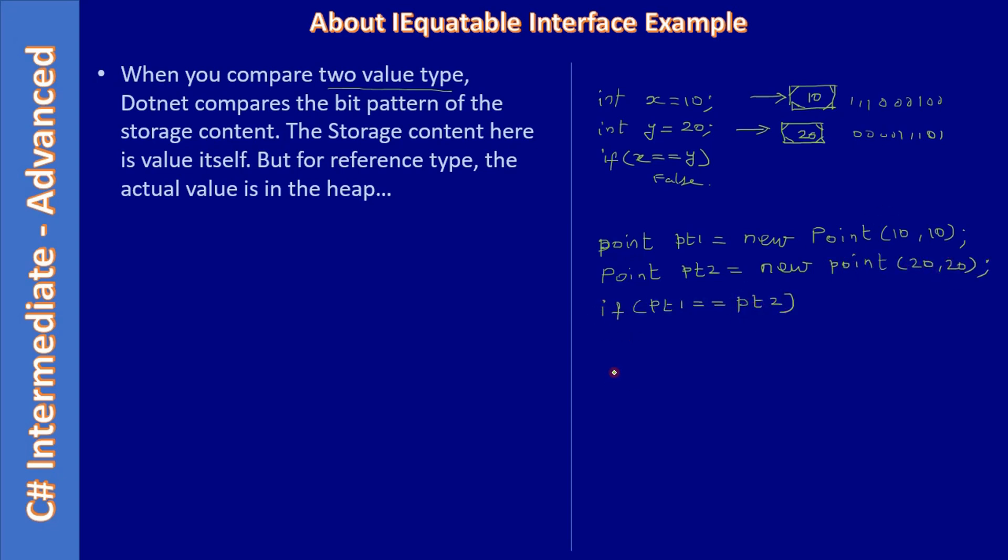Here what happens - let's say pt1. The content is not a value, it's an address location of the heap. Here you can see 0x. And in pt2, we are not storing the content here, we are storing the address 0y.